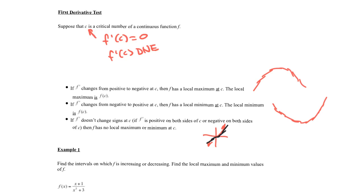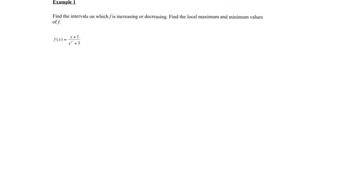For example 1, we have the rational function f of x equals (x + 1) / (x² + 3). They want us to find the intervals on which f is increasing or decreasing, and to find the local maximum and minimum values. Remember: increasing means f prime is positive; decreasing means f prime is negative.